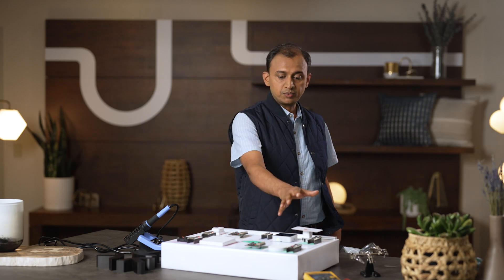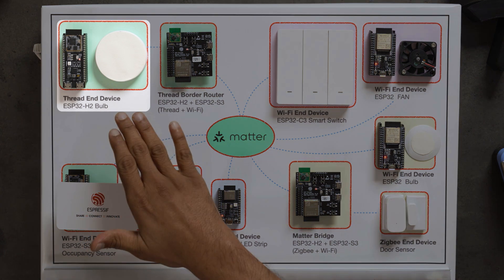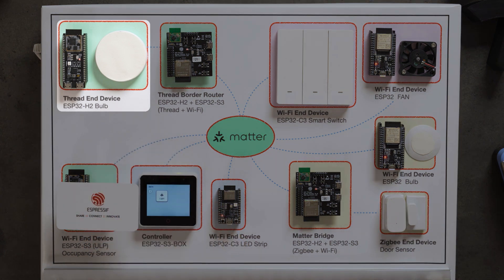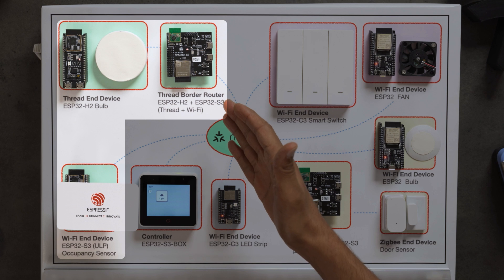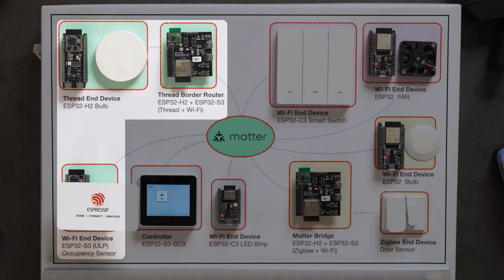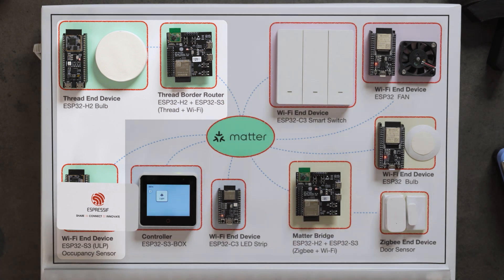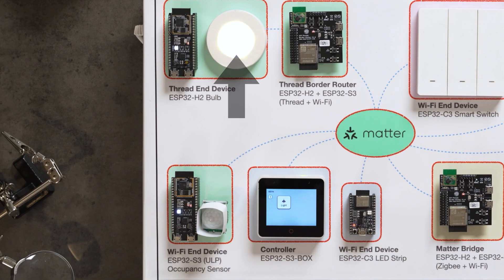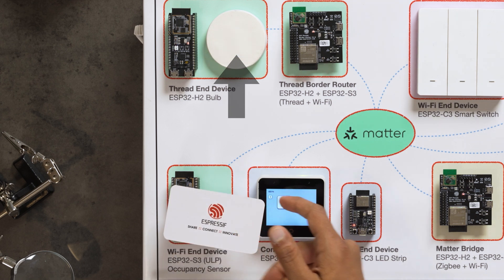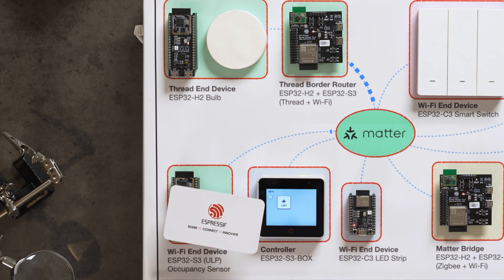Now we look at this part of the demo. Here we have a Thread based light and a Wi-Fi based occupancy sensor. Connecting them together is also a Thread border router that will ensure that the Thread and Wi-Fi sides can talk with each other. As I make a movement in front of the occupancy sensor, the light comes on. The Wi-Fi device in this case has connected to the Thread end device and operated upon it.